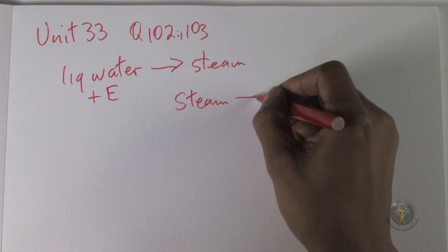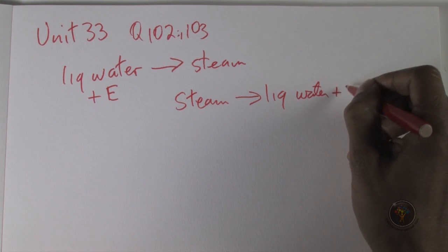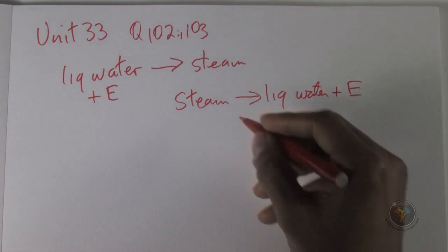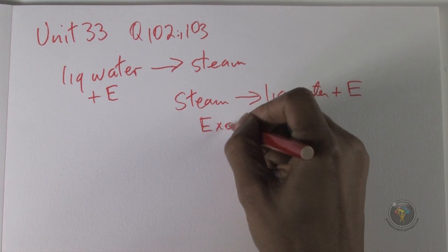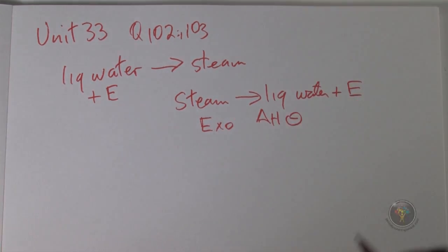So energy is being given off in the reaction. This is called an exothermic reaction, and that means delta H is negative for exothermic.